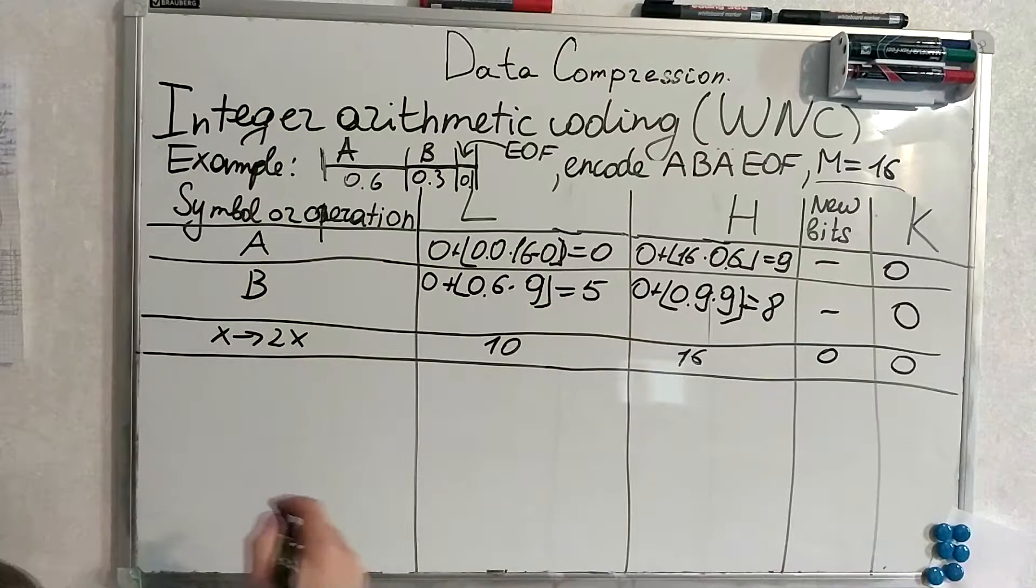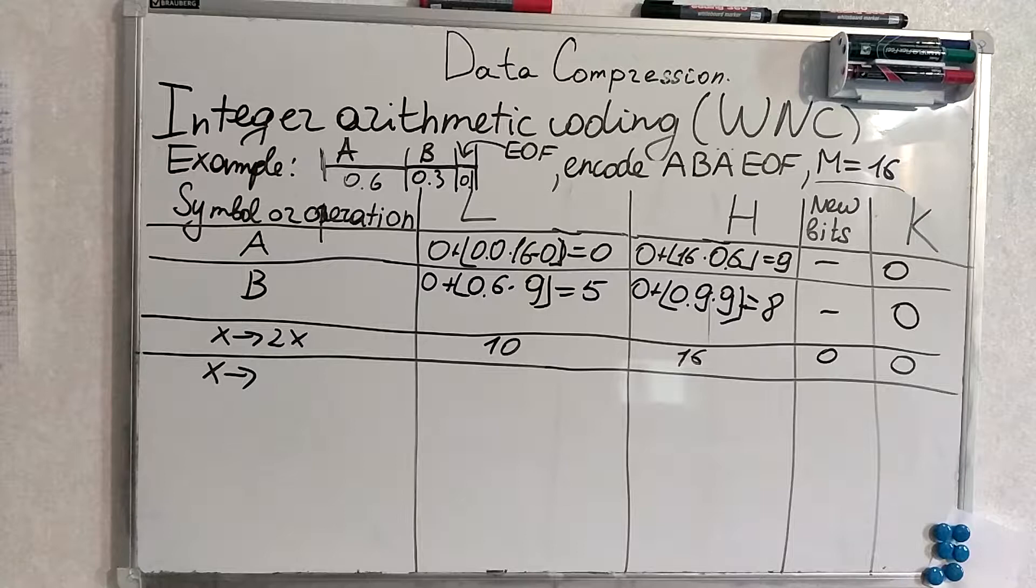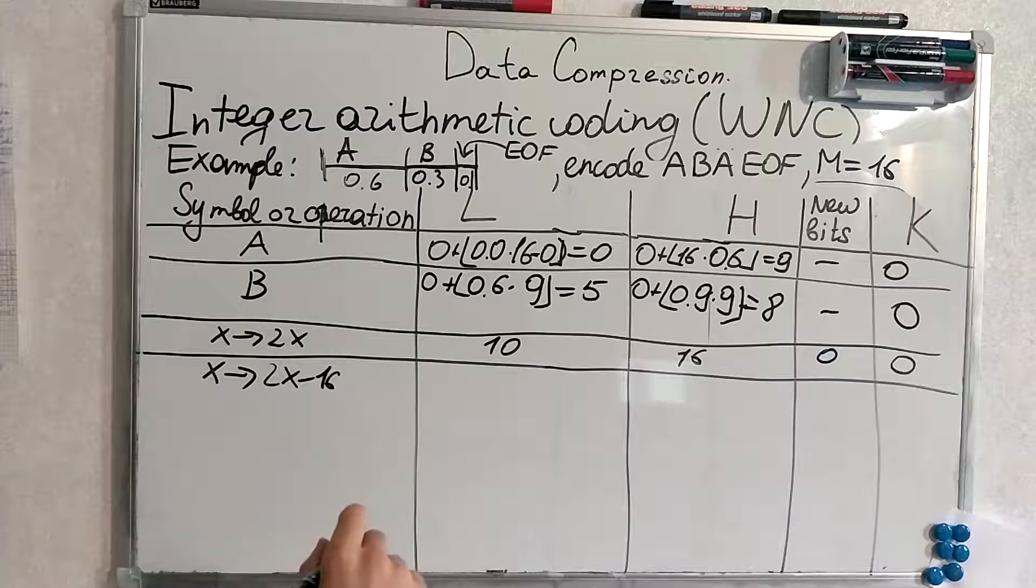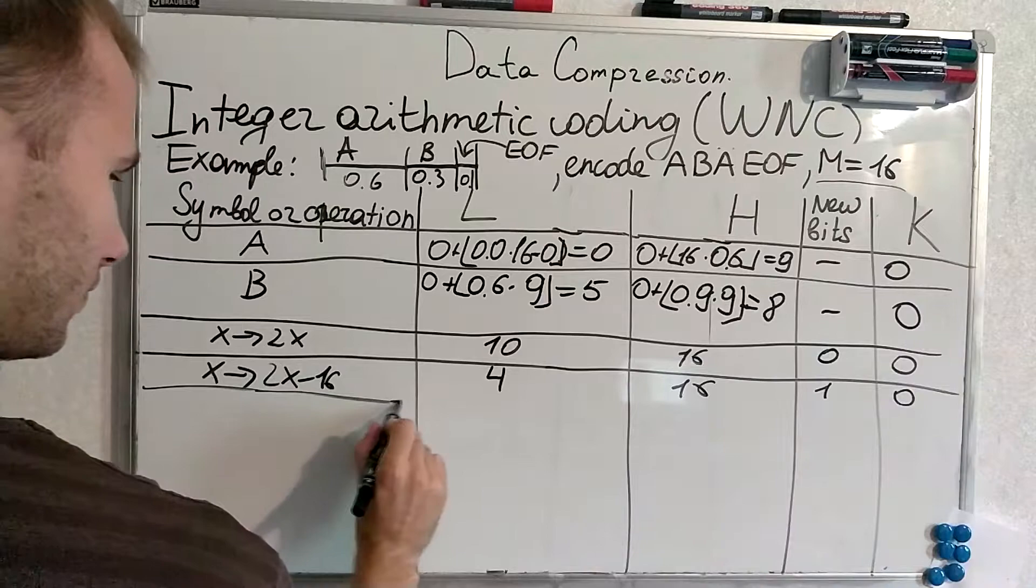Then now it's condition for another rescaling because our lower threshold is bigger than half of N. We do this. Right? 4, 16. We produce new bits. K is 0. Alright.